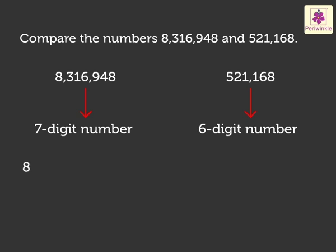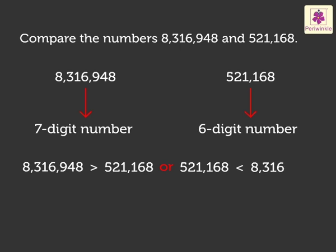Therefore, we say 8,316,948 is greater than 521,168. Or, we can also say 521,168 is less than 8,316,948.